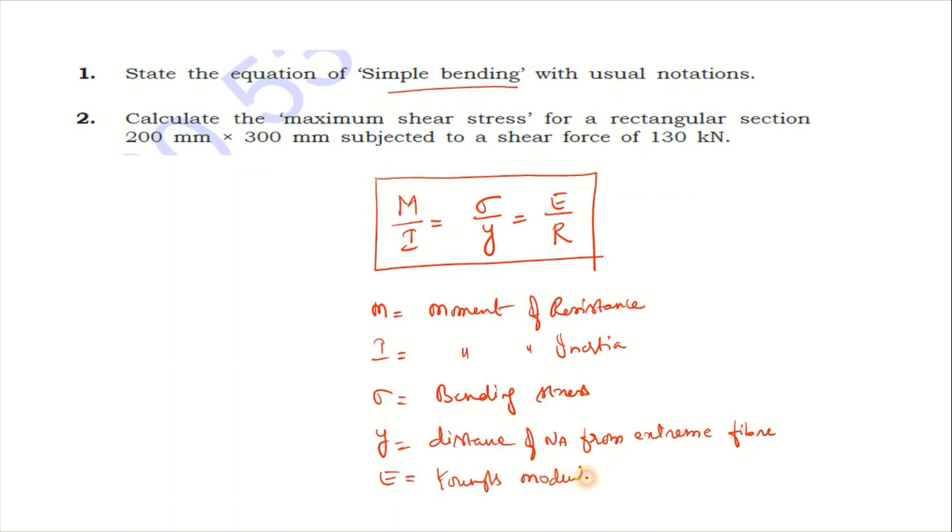This is the modulus of elasticity, R is radius of curvature. Easy 3 marks, basic formula. Last question was simple bending definition, here is simple bending equation.